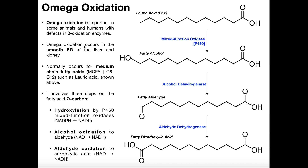This pathway is going to occur in the smooth ER of the liver and kidneys. That's in contrast to beta oxidation, which occurs in the mitochondria, and then alpha oxidation, which we covered separately, that actually occurs in the peroxisome. Normally, omega oxidation is only going to occur on medium chain fatty acids, which generally are fatty acids that contain between 6 and 12 carbons, such as lauric acid, a 12-carbon fatty acid. We're going to look at omega oxidation on lauric acid.